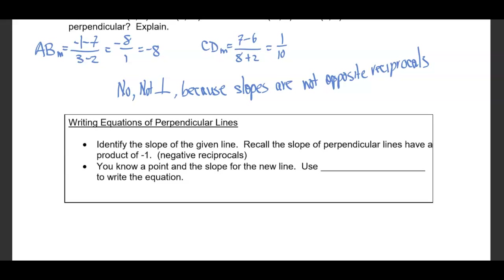Writing the equations of perpendicular lines: First, identify the slope of the given line. Recall that the slopes of perpendicular lines have a product of negative 1 — they are opposite reciprocals, or negative reciprocals. Once you know a point and the perpendicular slope, you use point-slope form.